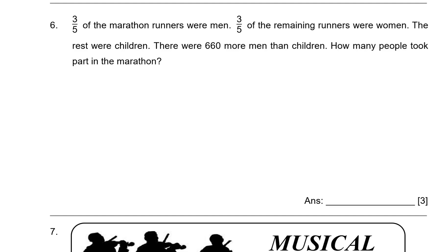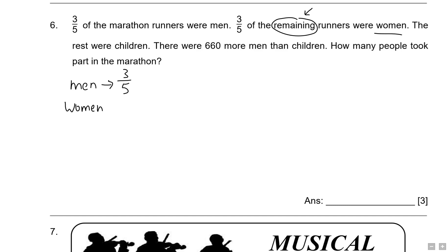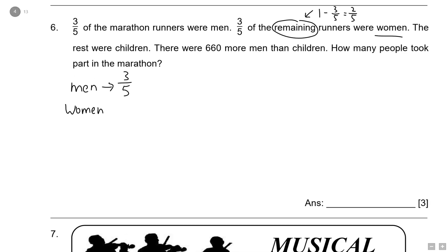Let's go on to question 6. You have got 3/5 of the marathon runners were men — write down the information. And what about women? They said that 3/5 of the remaining runners were women. What does it mean by 'remaining'? If you have 3/5 that were men, the remaining after deducting the 3/5 will be 2/5.